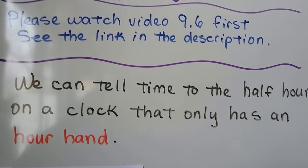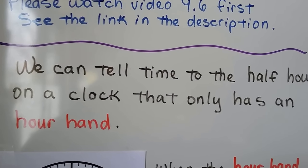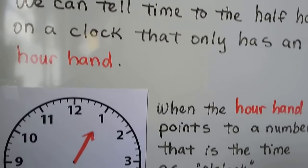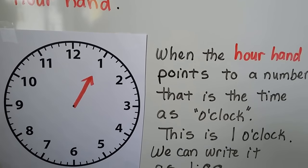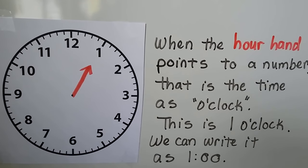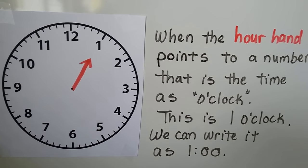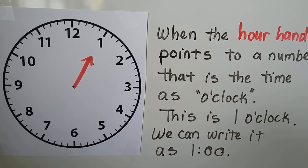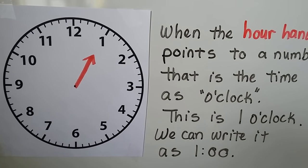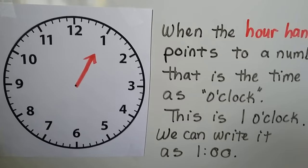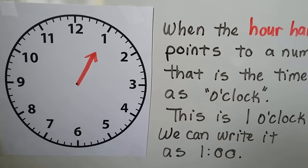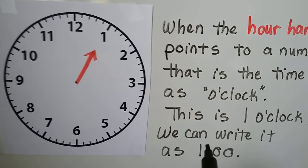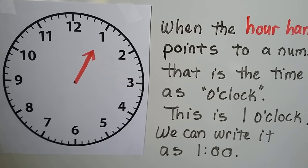We can tell time to the half hour on a clock that only has an hour hand. When the hour hand points to a number, that is the time as o'clock. This is one o'clock — the hour hand is pointing to the one. We can write it as a one, with a colon, and zero zero.